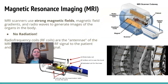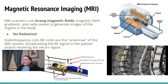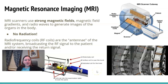MRI uses a strong magnetic field — there's no radiation involved. They can get different planes for imaging and more advanced imaging than diagnostic x-ray. A lot of patients, though, have a hard time with it because of claustrophobic concerns, and there are long exams.